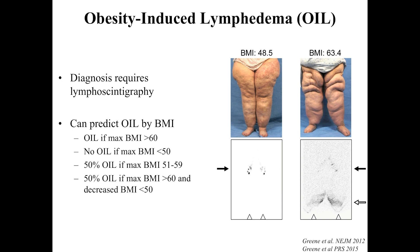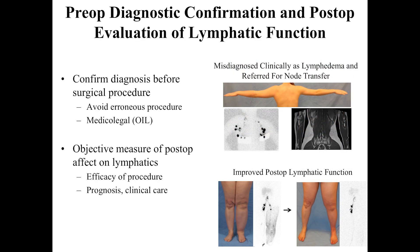With obesity-induced lymphedema, the only way to determine if a patient has lymphatic dysfunction is by obtaining the lymphoscintigram. You can see this patient has abnormal transit and dermal backflow. After imaging many patients, we know that almost universally if their BMI is over 60, they will have lymphatic dysfunction on lymphoscintigraphy, and if it's below 50, they most likely won't have imaging findings of lymphatic dysfunction.